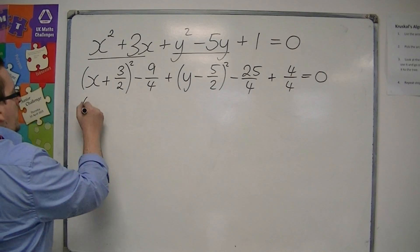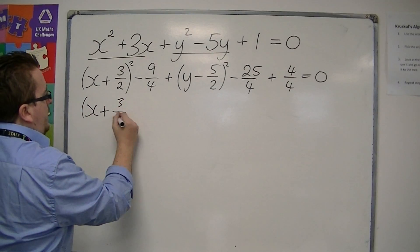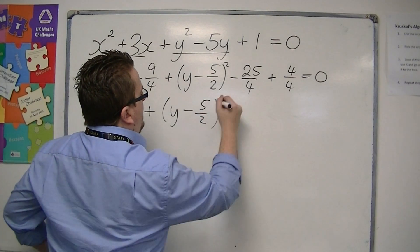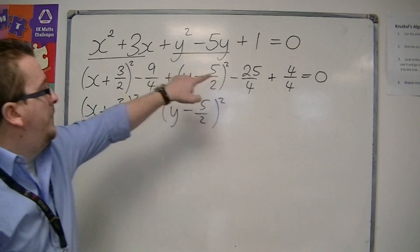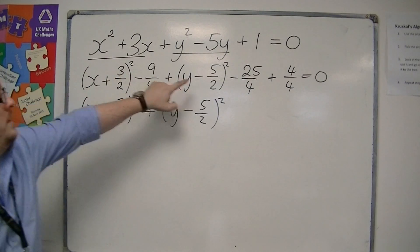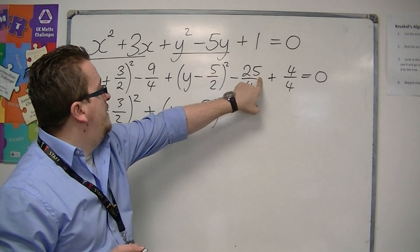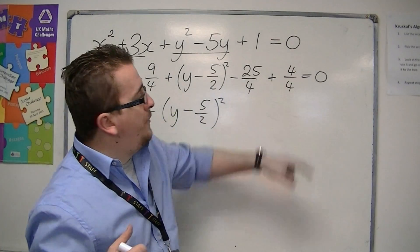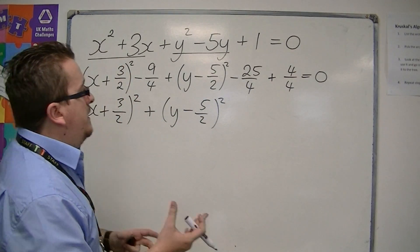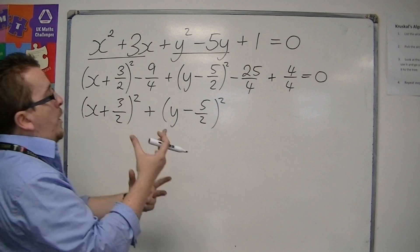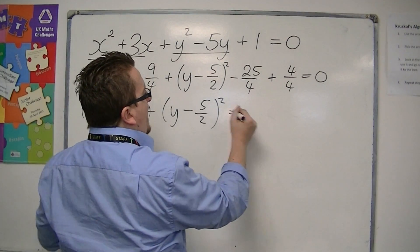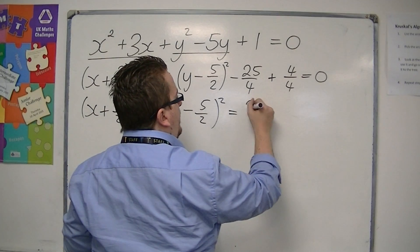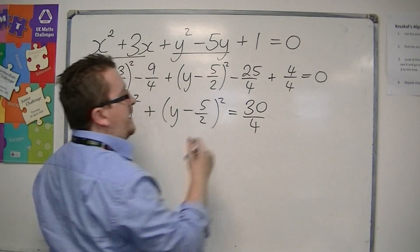So now I'm going to write those two brackets next to one another and deal with the other bits, these three other bits. So I've got minus 9, take away 25, so that's minus 34. Then I've got to add 4, so that's minus 30. So we've got minus 30 over 4, which I'm then going to add to the other side. So I'm going to add 30 over 4 to both sides, and that gives me this.